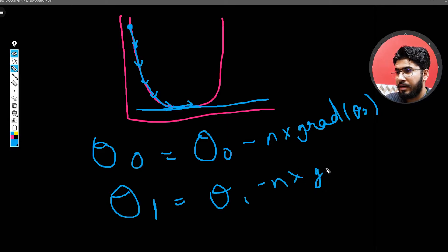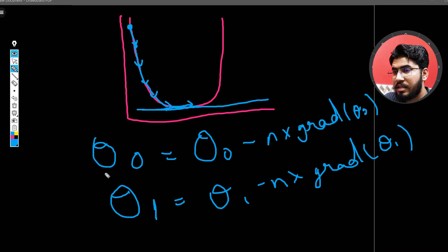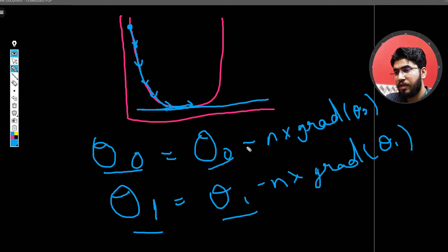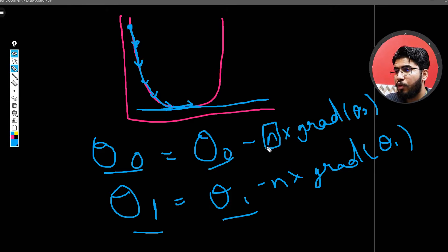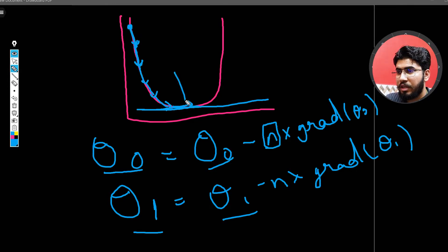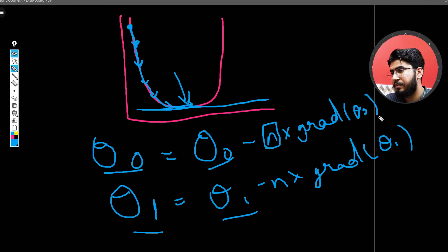Let me explain. You know what theta 0 is — it is our current theta that we want to update. We use this formula to update our values. Here, n is the learning rate. As you can see, we jump from one position to the next. To control the size of those jumps we use the learning rate. Without a learning rate, gradient descent would be very slow and take too much time to reach the minimum.